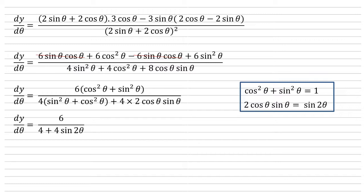So dy by d theta equals 6 over 4 plus 4 sine 2 theta. And dividing this 3 by 2 gives us 3 over 2 over 1 plus sine 2 theta as required. So the a that's needed is 3 over 2.